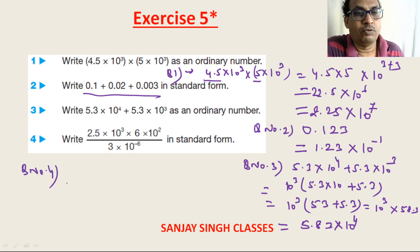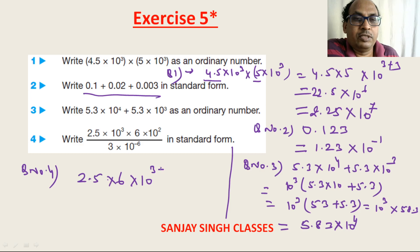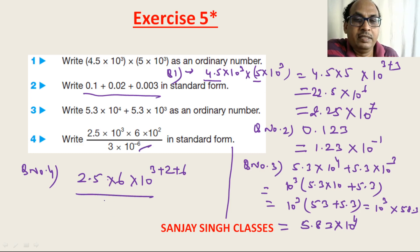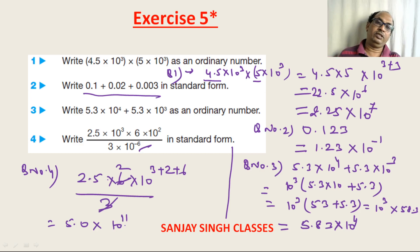Question 4 involves division. We compute 2.5 × 6 = 5.0 for the numerical part, and the powers of 10: 10^(3+2) in the numerator and 10^(−6) cancel, giving 10^(8+3) = 10¹¹. The result is 5.0 × 10¹¹.